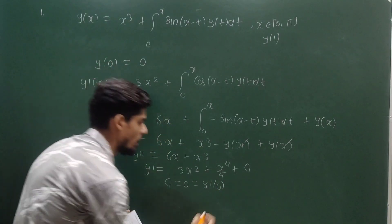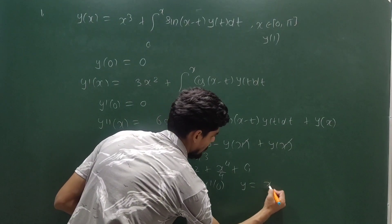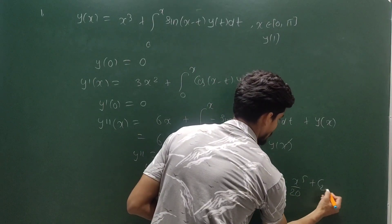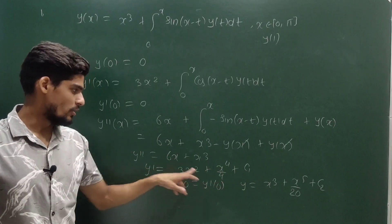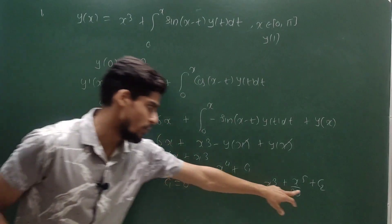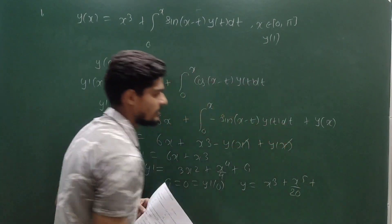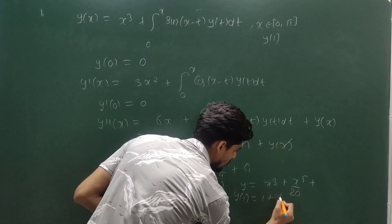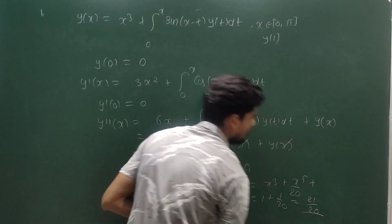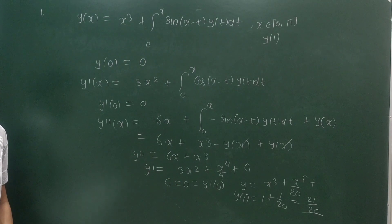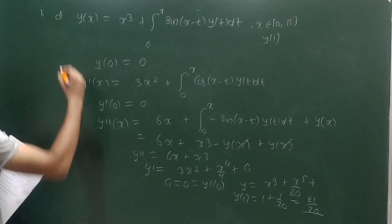Integrating again, y = x³ + x⁵/20 + C₂. Applying y(0) = 0 gives C₂ = 0. So the solution is y = x³ + x⁵/20. They are asking the value of y at x = 1, so y(1) = 1 + 1/20 = 21/20. So option D is correct.